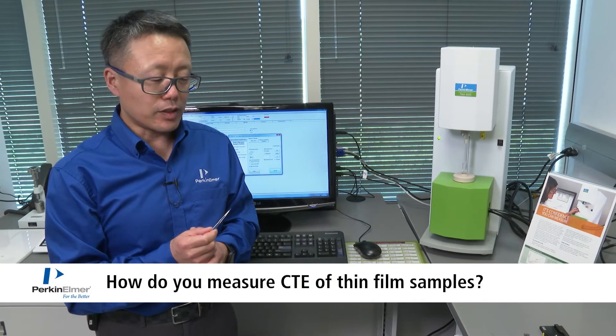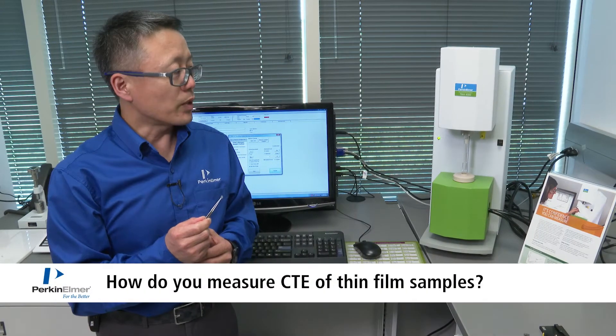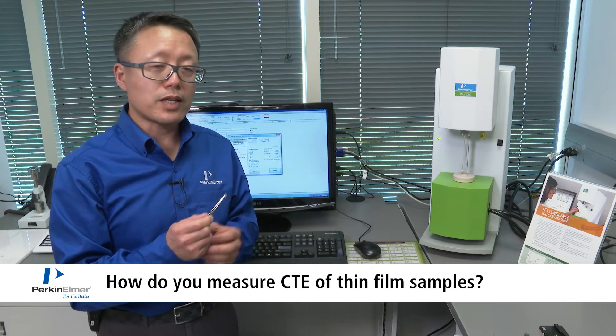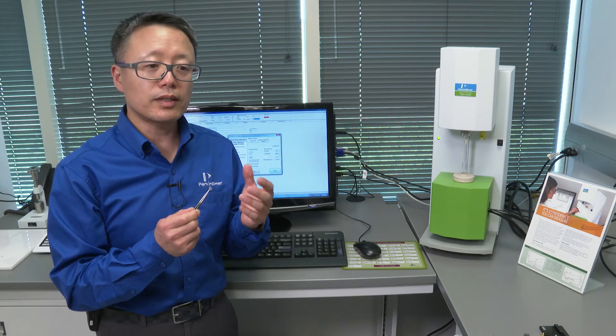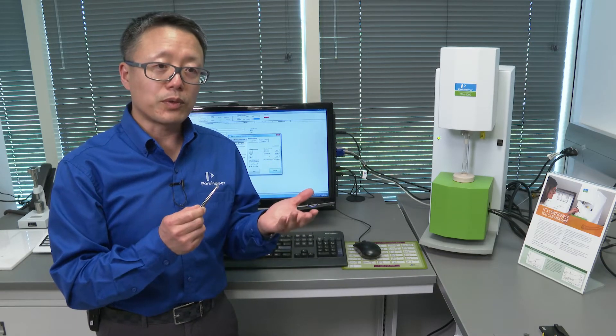The third kind of sample is film samples. We can also use a TMA to measure the thermal expansion for film samples or fiber samples.